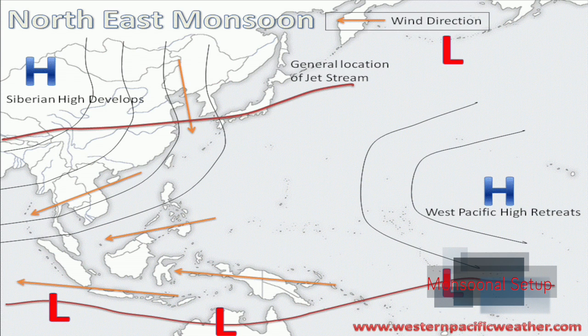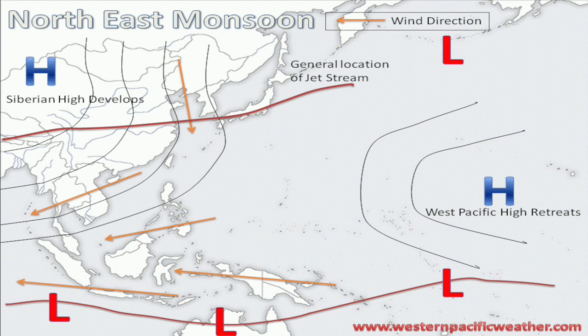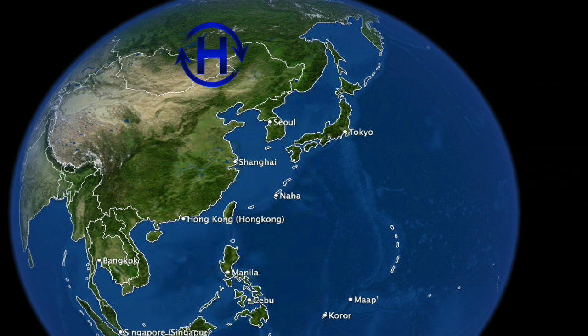Now this cold core high is dependent on the cold air that is settled across much of this region. Now this is a general rule of thumb. It does change throughout the winter months based on low pressure areas that migrate across the region, but overall we have the winds go clockwise around this high pressure area.